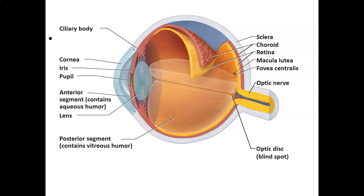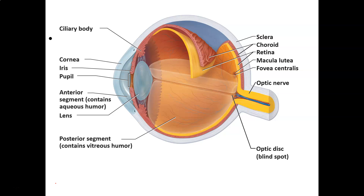We're going to talk about the eye in more detail. This picture is very similar to the one in your lab manual. The stuff you need to know about the eye is that there are three basic layers: the fibrous layer, the vascular layer, and the sensory layer. The fibrous layer has two parts — the cornea, which is sometimes called the window to the eye.